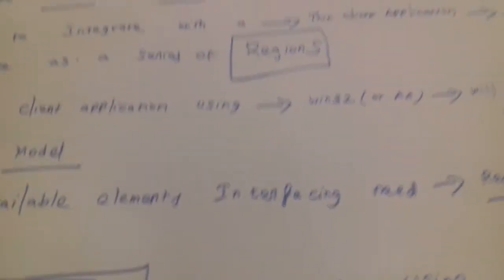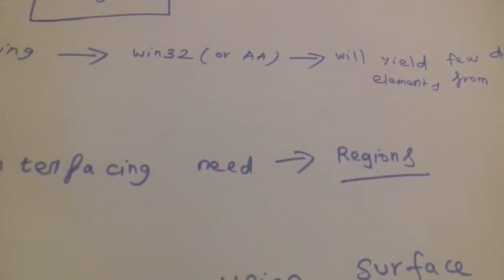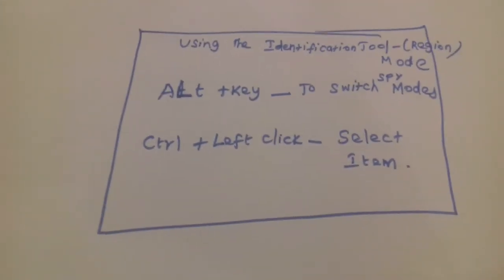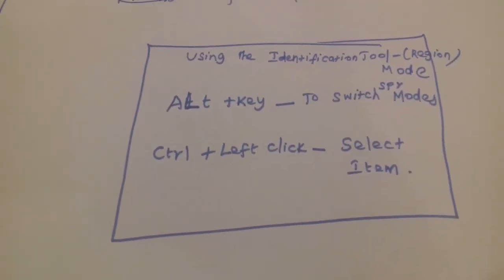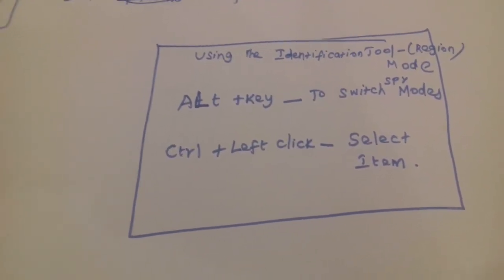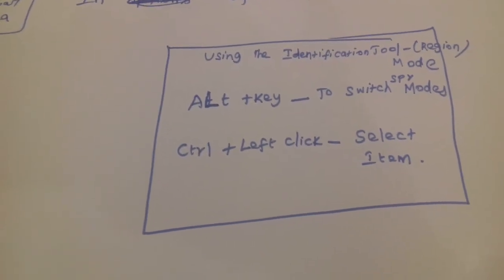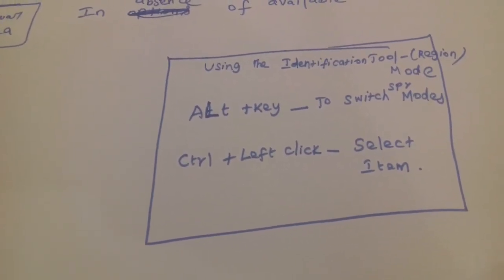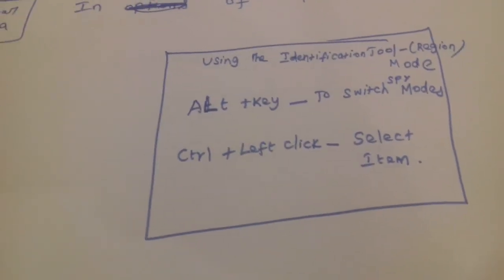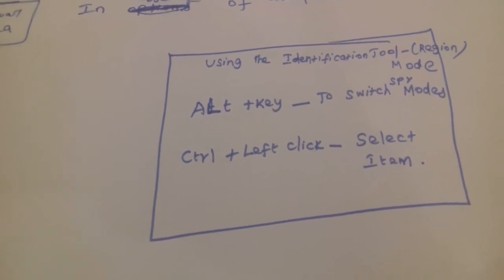In the absence of available elements for interfacing, we will need regions. This is the identification tool mode. Usually with the Alt key, we can switch spy modes and region modes. When we want to select items, we use Control plus left click.